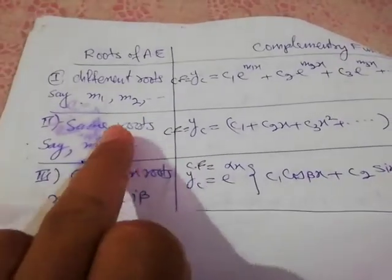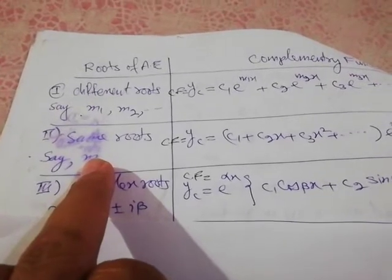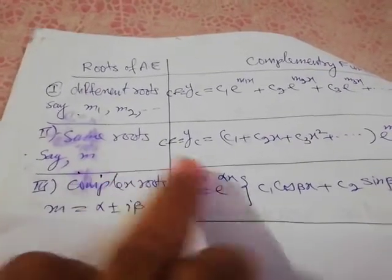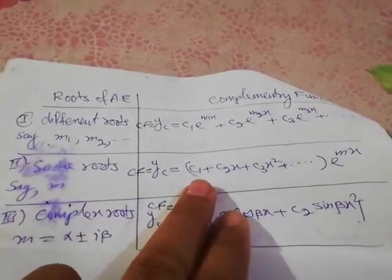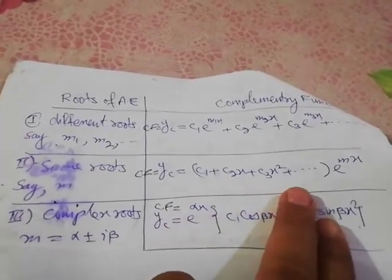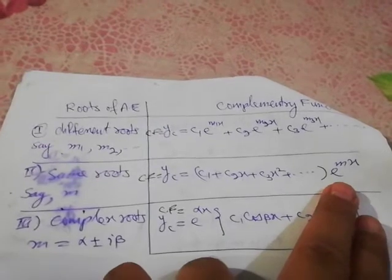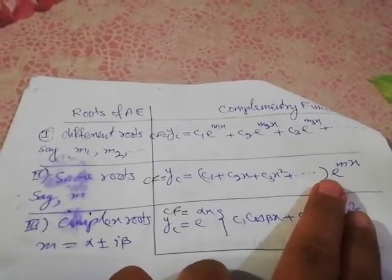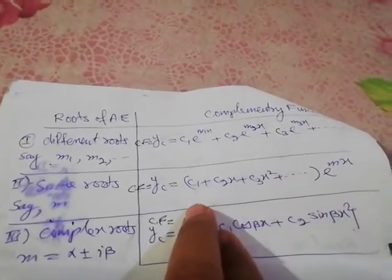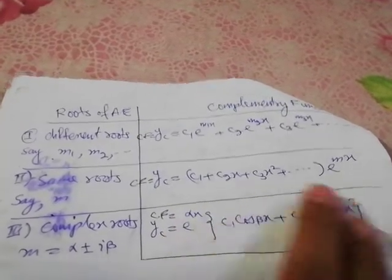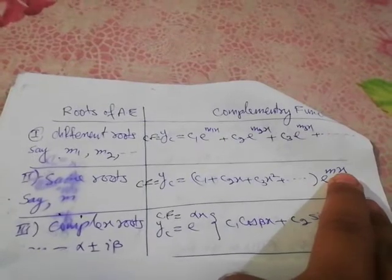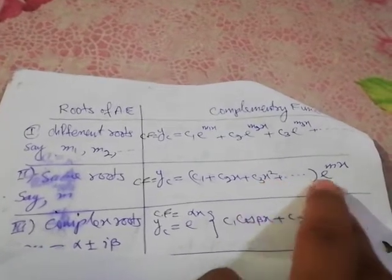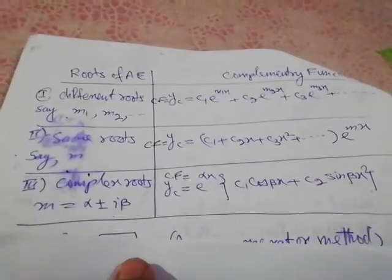If the roots of the auxiliary equation are the same, say root m occurring twice, then the complementary function is written as (c₁ + c₂x)e^(mx). If the same root occurs three times, you add a third term c₃x², and so on.